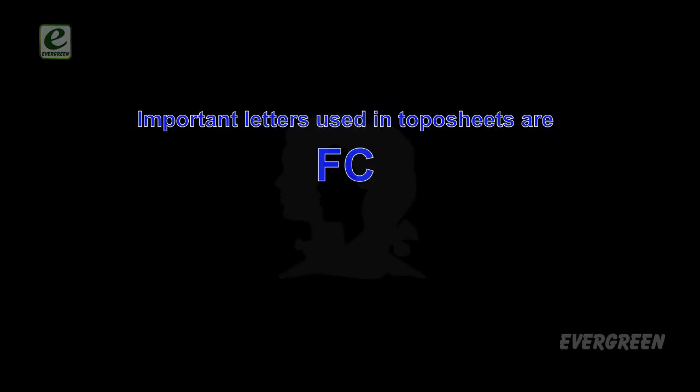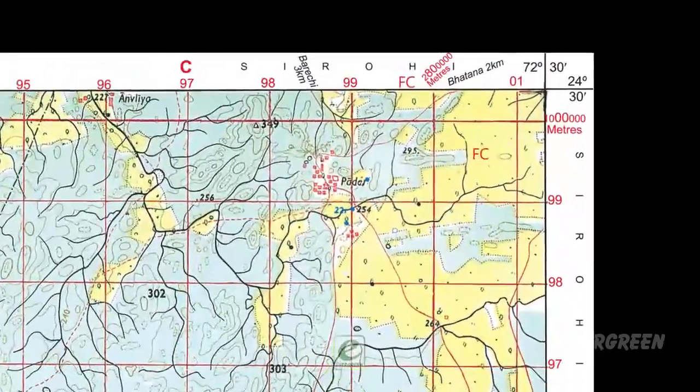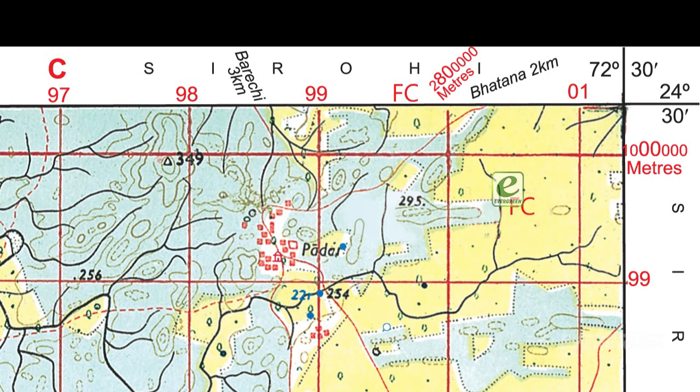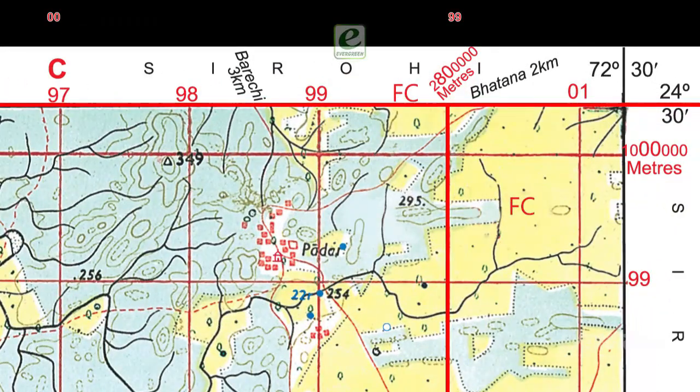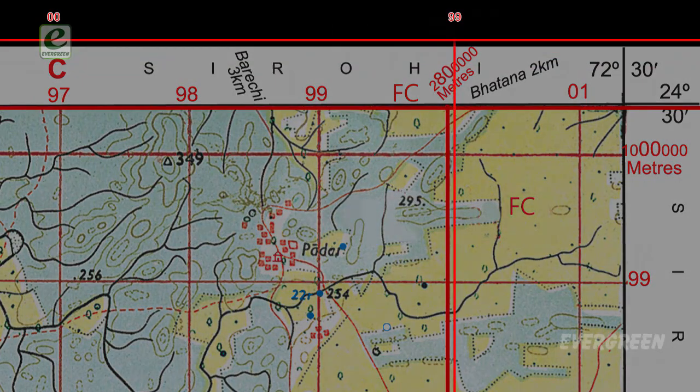There are other important letters such as FC. On a topo sheet, two figures of eastings are printed at one kilometer intervals, increasing numerically eastward from 00 to 99. After the hundred kilometer mark, the next measurements begin with an extra letter — for example, FC in the given figure. These alphabetical codes represent the biggest grid square of 10,000 square kilometers and are placed at every hundred kilometer interval.